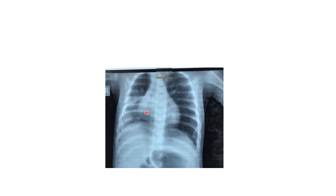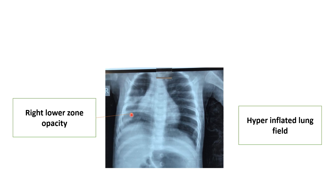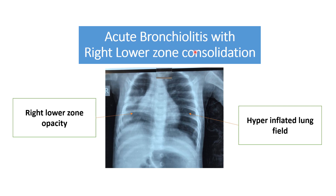In this x-ray, an opacity is present — this is the x-ray of an infant having signs and symptoms of respiratory distress, fever, and cough. In the right lower zone you can see opacity with air bronchogram, which is seen in consolidation. The lung field is expanded beyond the seventh rib, so we label it as a hyperinflated lung field. This infant was having acute bronchiolitis with right lower zone consolidation.